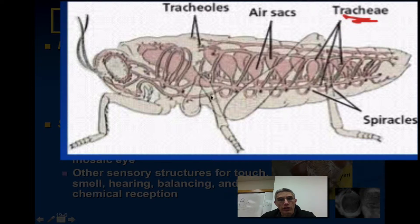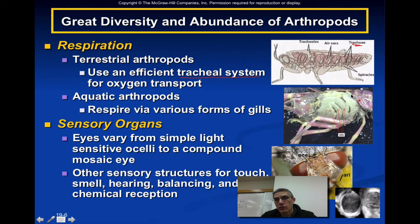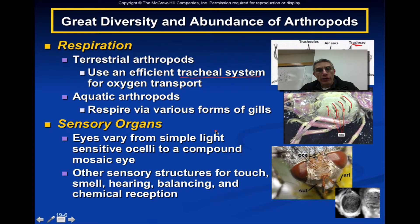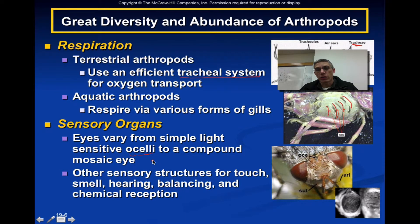Aquatic arthropods, on the other hand, respire via various forms of gills. In the dissected crayfish shown here — which you will examine in lab — the gills are clearly visible. Sense organs in arthropods vary depending on the type. Eyes can range from a simple, light-sensitive ocelli to a complicated compound mosaic eye with a lens, cornea, and retina. Other sensory structures provide senses of touch, smell, hearing, balancing, and chemical reception.